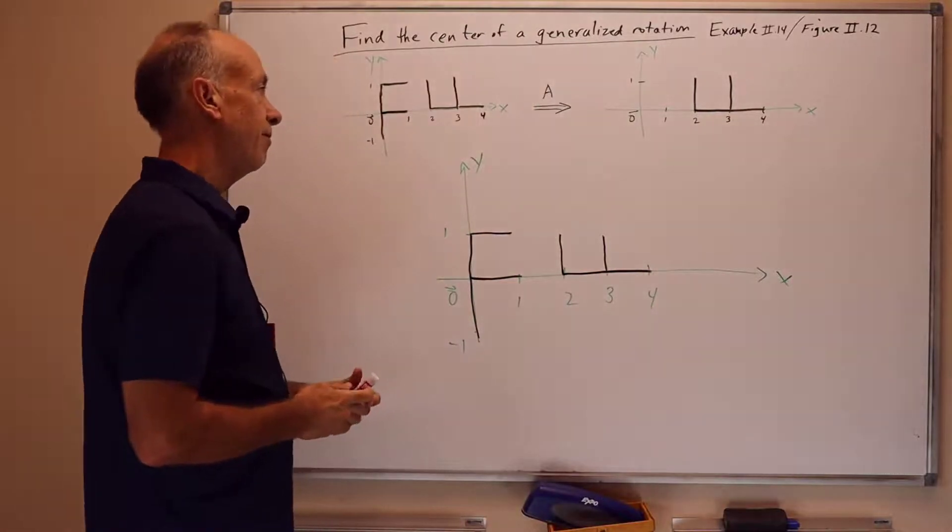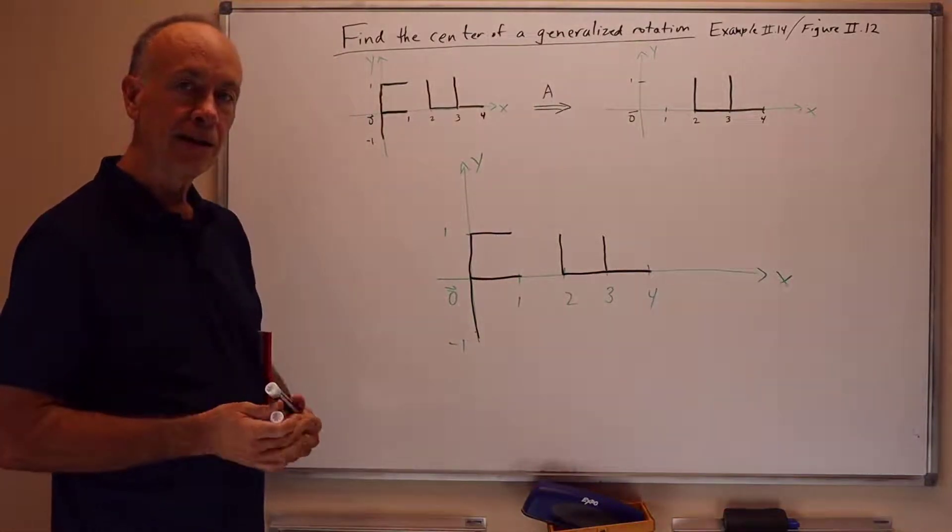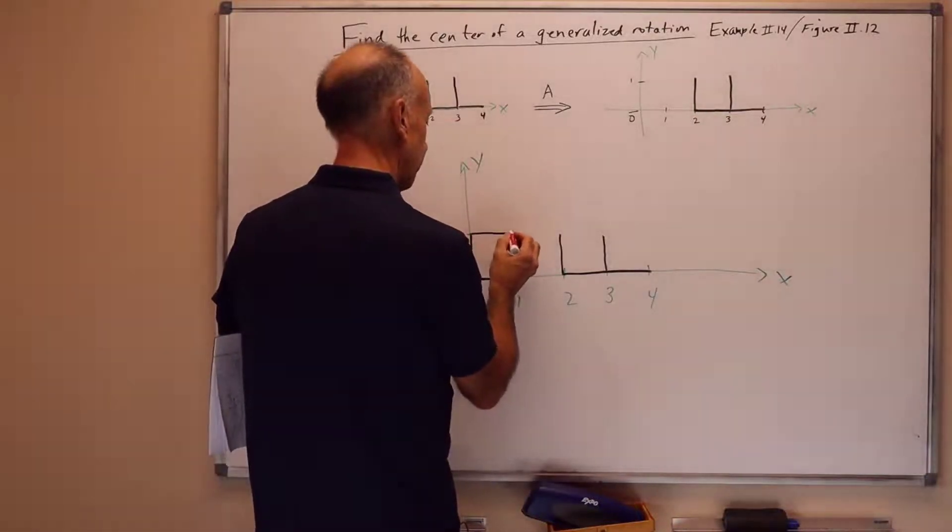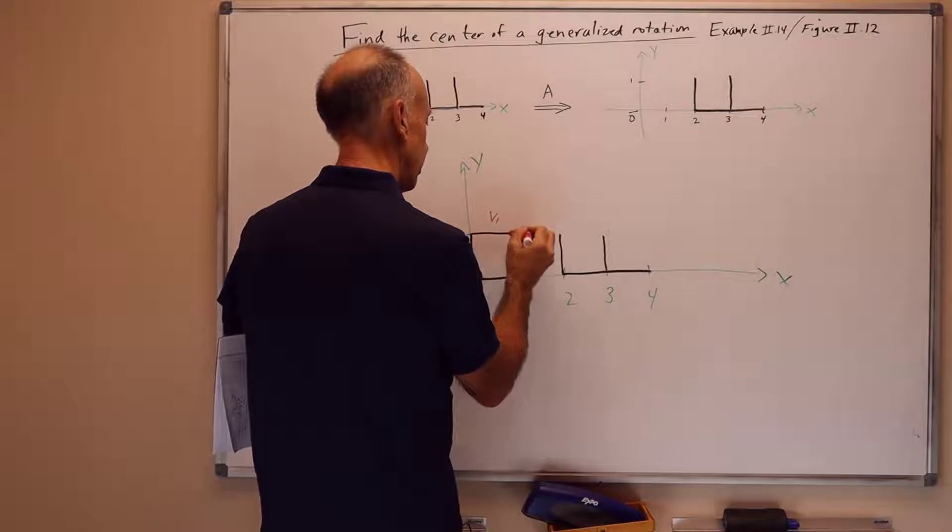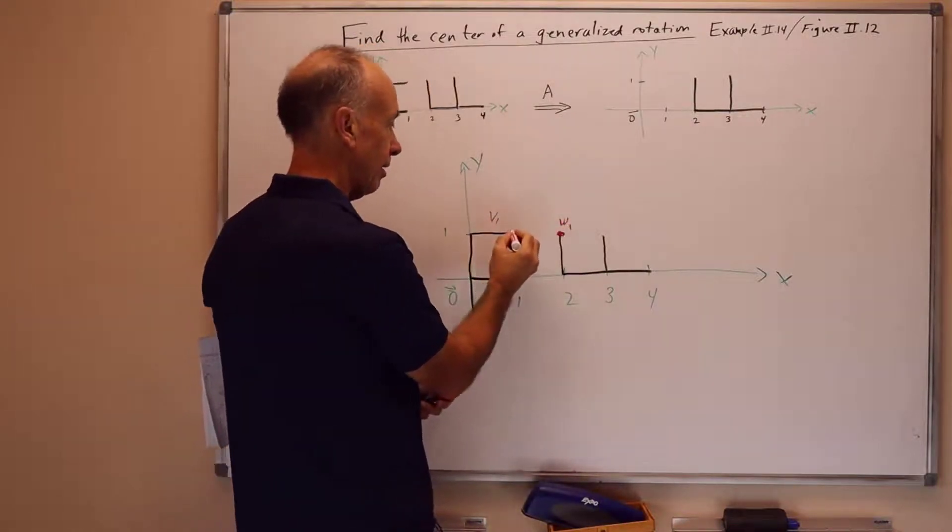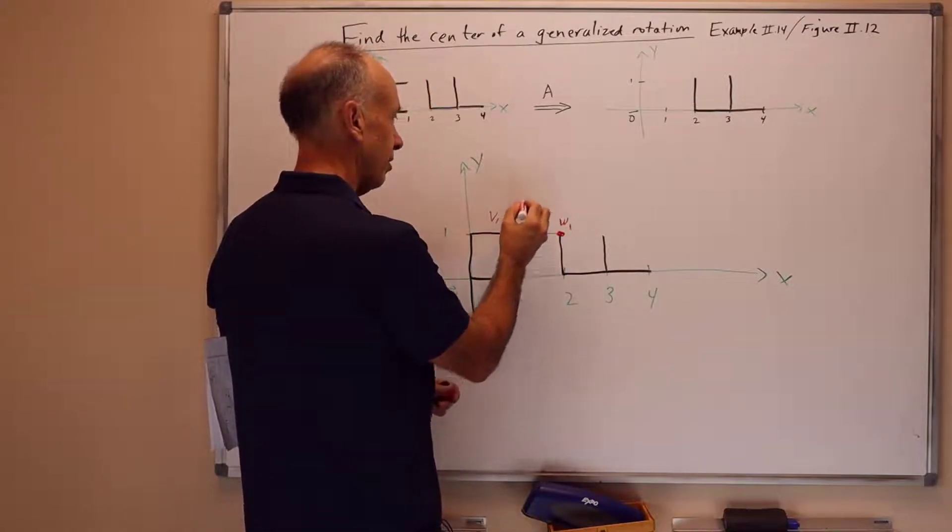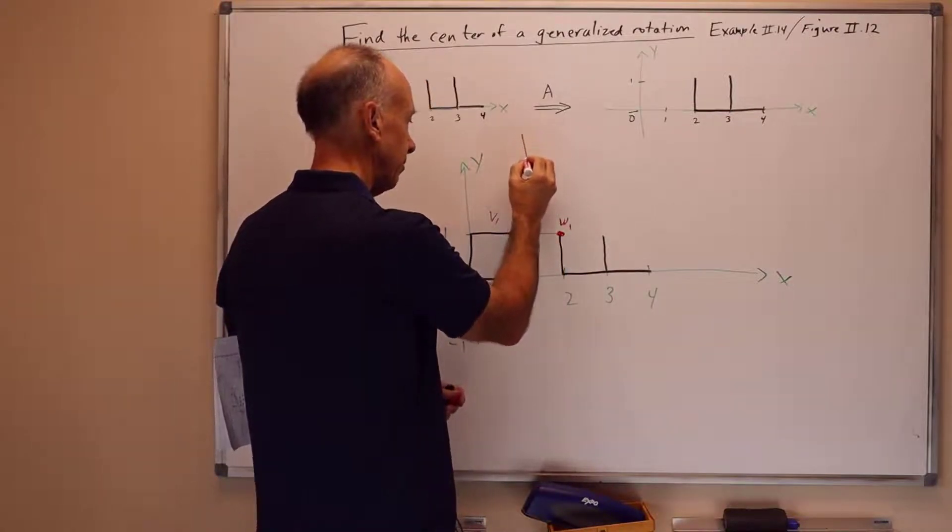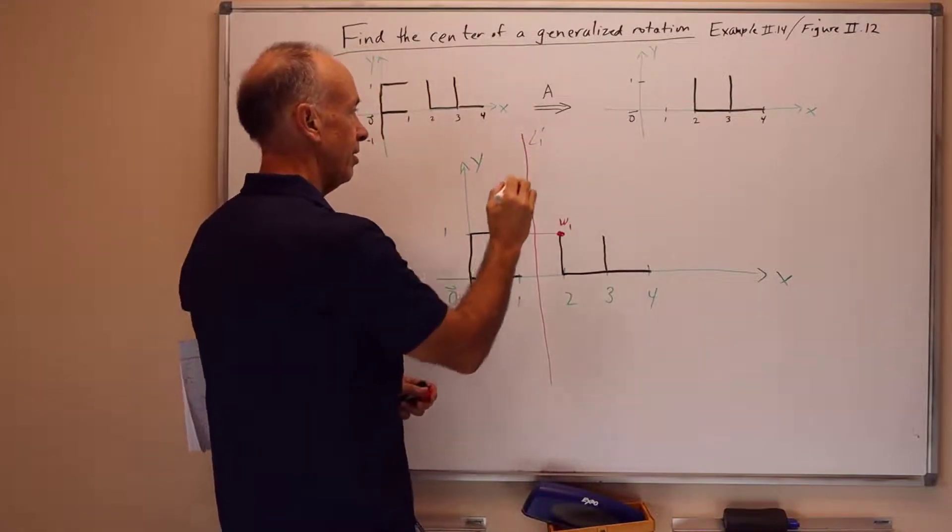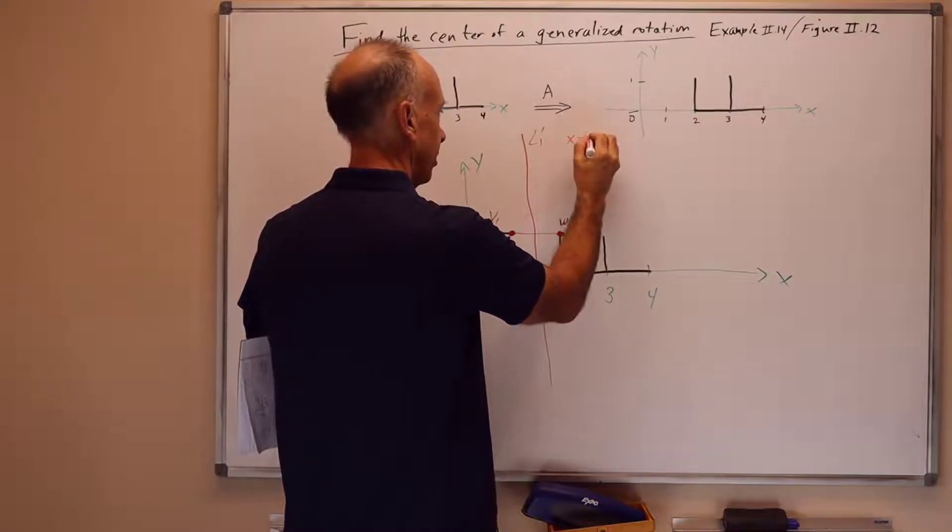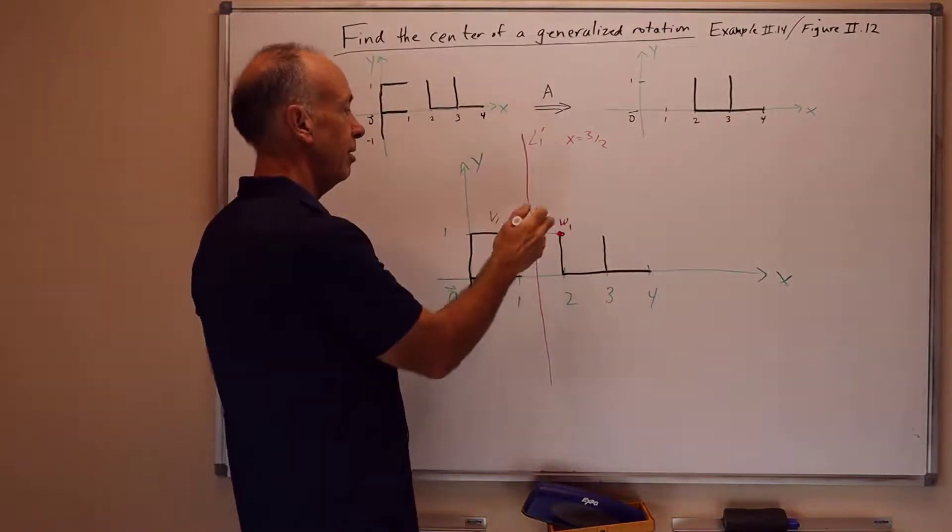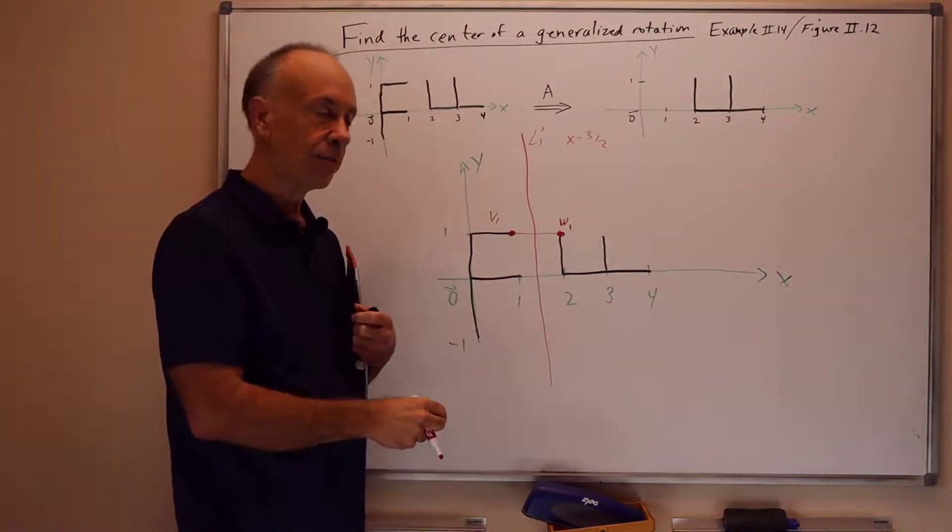And now I want to pick some values for v and w to pick their perpendicular bisectors of the line segment joining them. So to start with a nice easy one, here's v1 and here's w1. The line segment joining them is here. And that's the perpendicular bisector. I'll call that l1 prime. This is the line where x equals 3 halves. So we know that the u is somewhere on l1 prime.